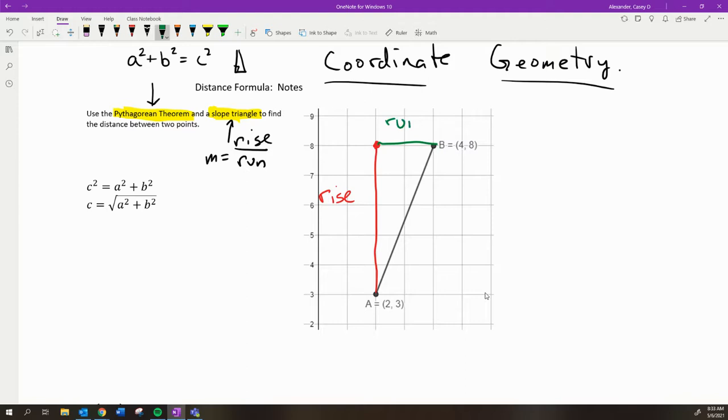And those two lines together, combined with the segment that we're talking about, they make a right triangle. And so if I wanted to know the length, the distance between point A and B, if I call that d for distance, I could just count the length of these sides.